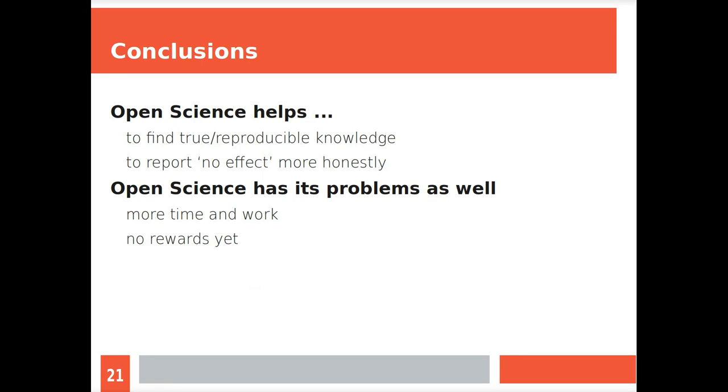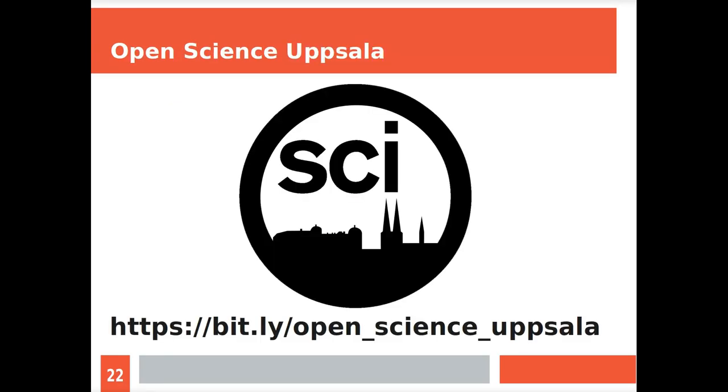Open science helps to find true and reproducible knowledge and to report finding no effect more honestly. It has its problems as well. It's more time and work. There are no rewards strongly in place yet, although the European Union is working on that. Finally, I want to talk about Open Science Uppsala. There is an Open Science community in Uppsala called Open Science Uppsala. They meet once a month in the central library and everyone is welcome. That's part of Open Science as well, to be open for everyone.